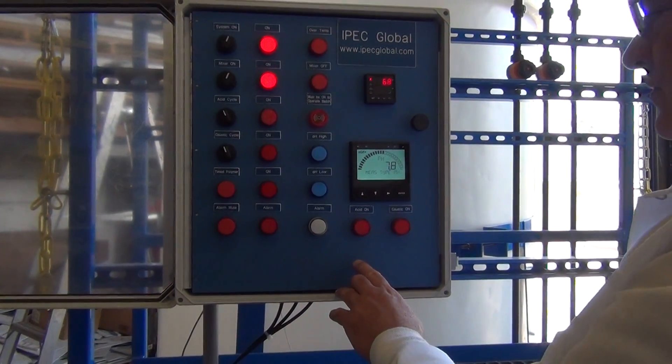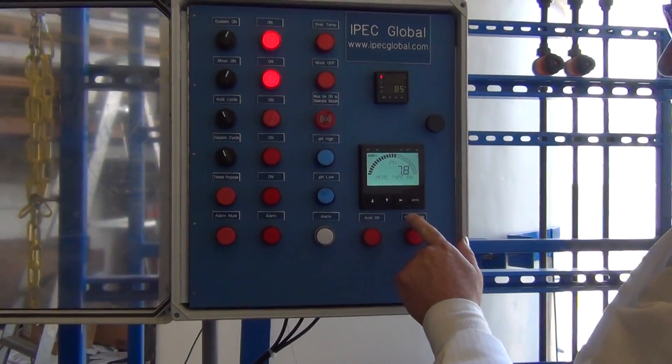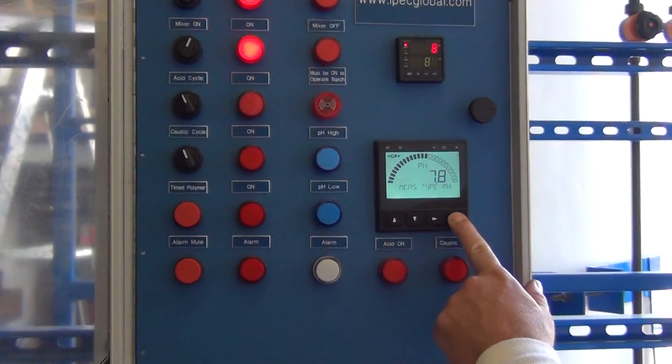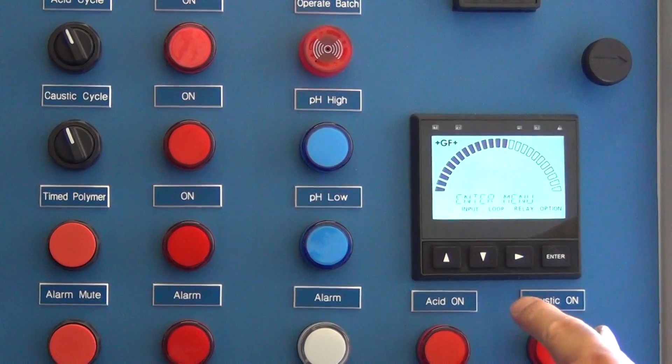To change the setting for the acid pump, when you're at the main screen, you want to press and hold enter for two or three seconds. That brings you into this menu.